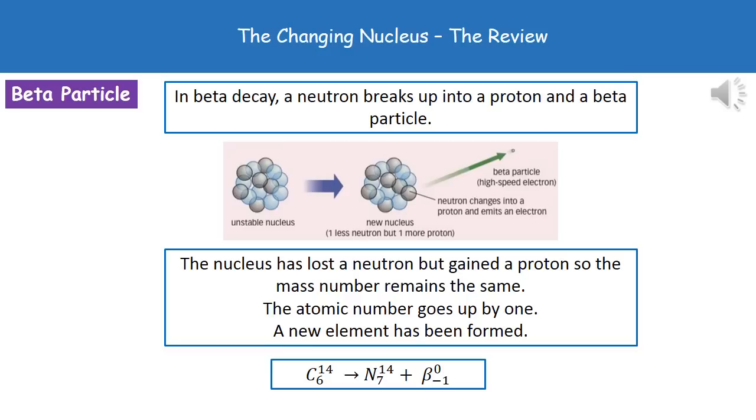But the difference here is in the atomic number. However, because we've gained a proton, that means the atomic number is going to increase by one. So, because the atomic number has changed, we've made a new element.